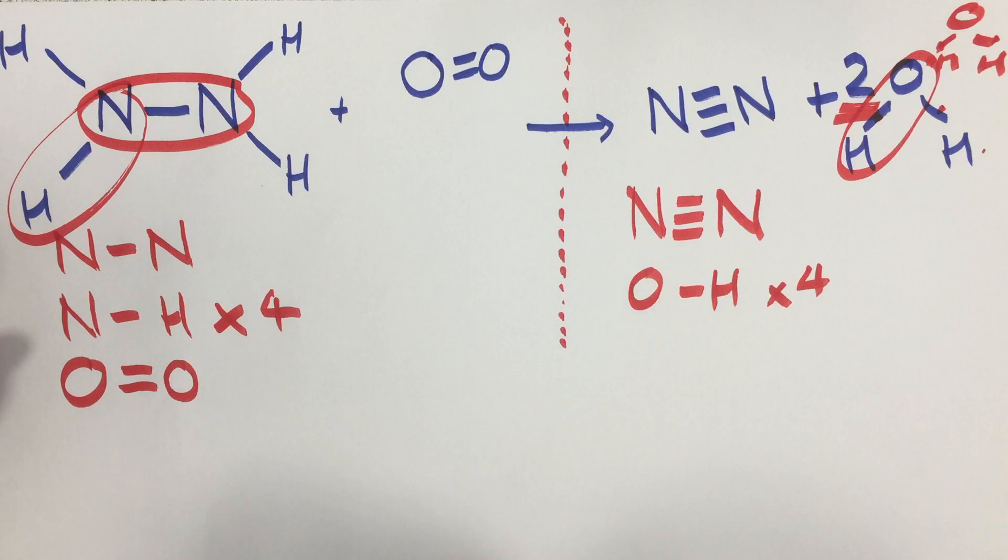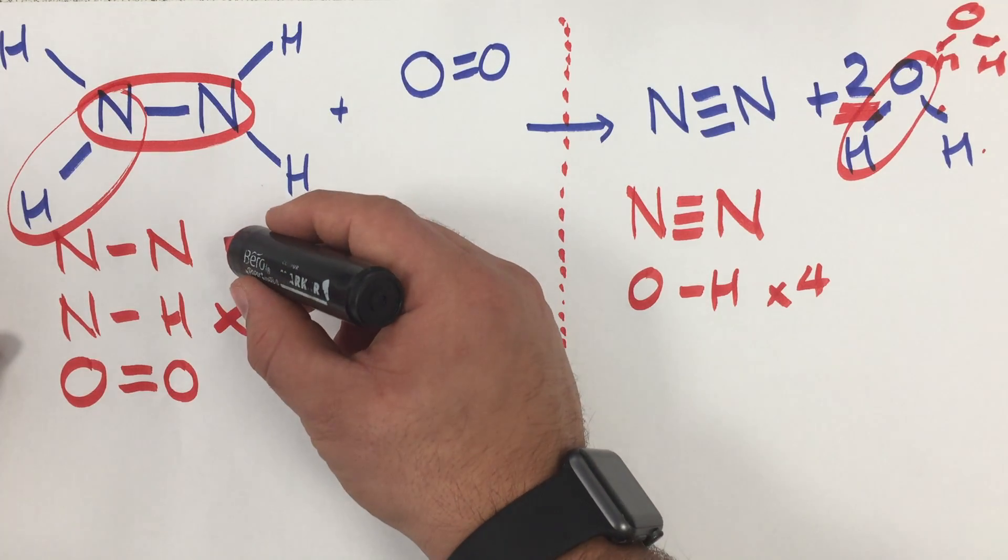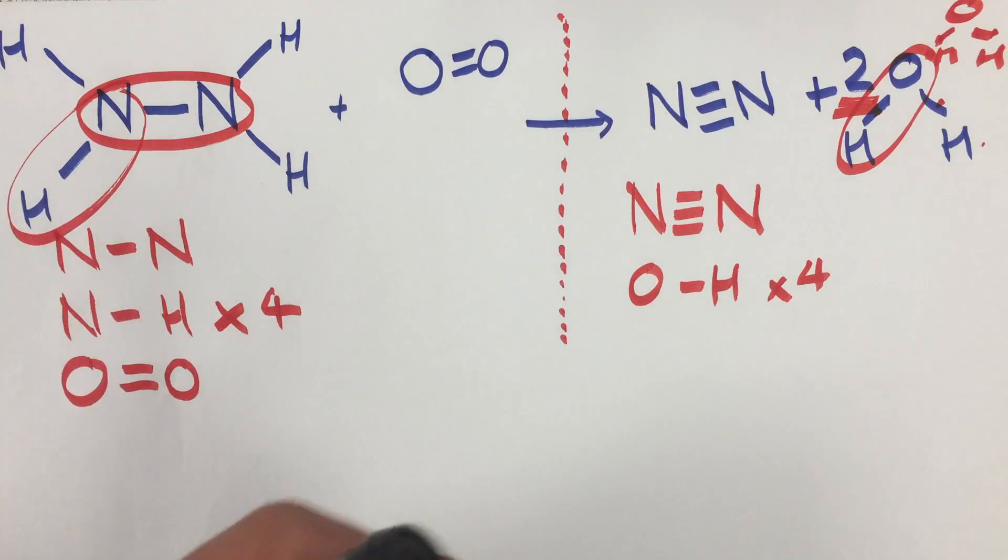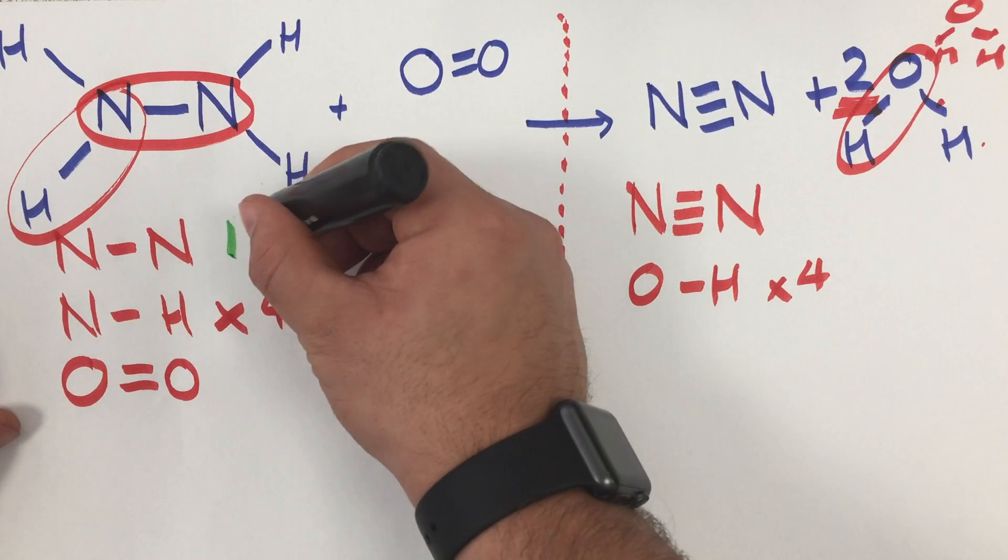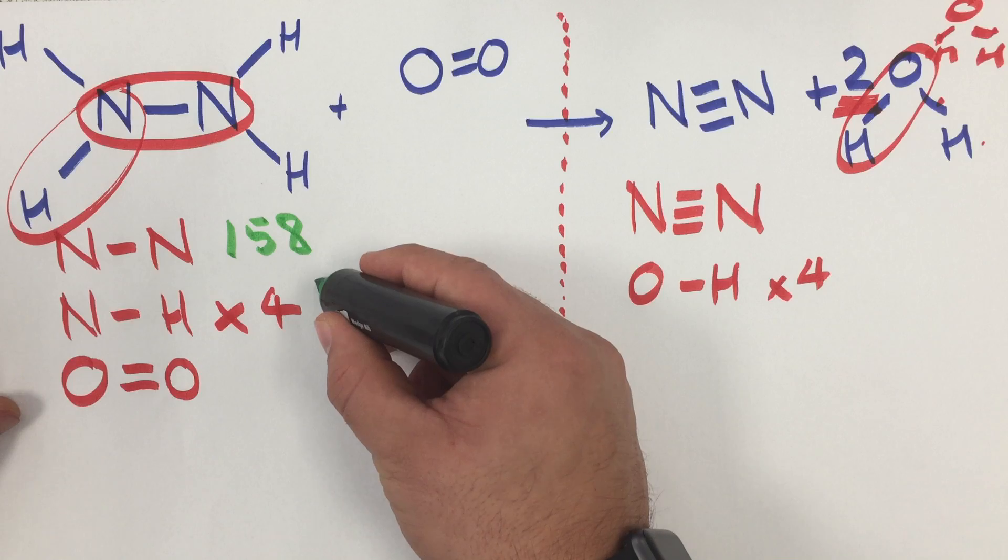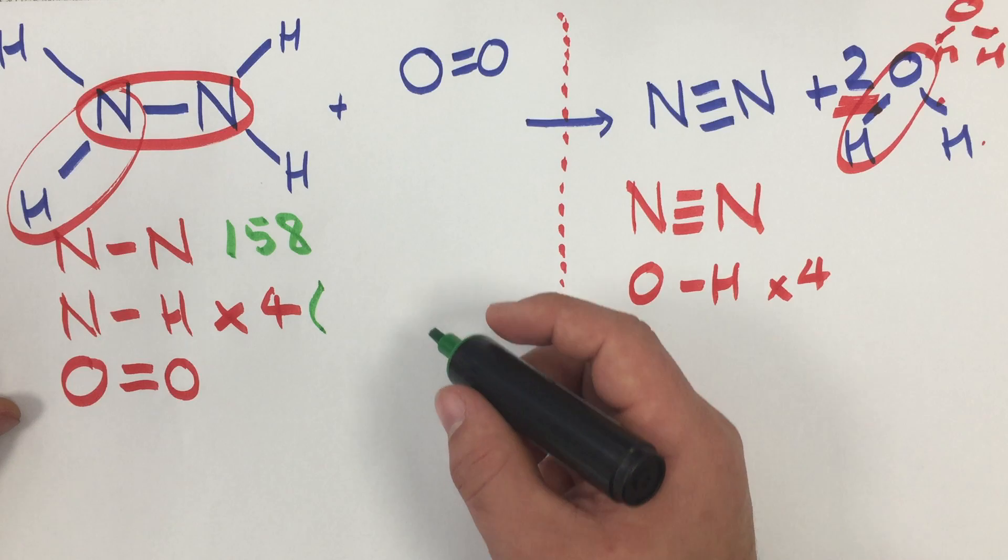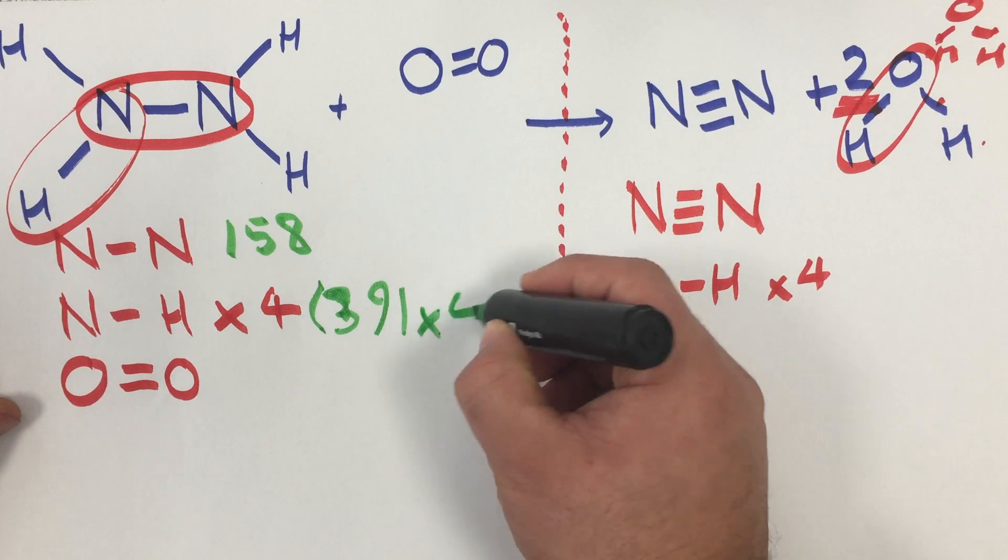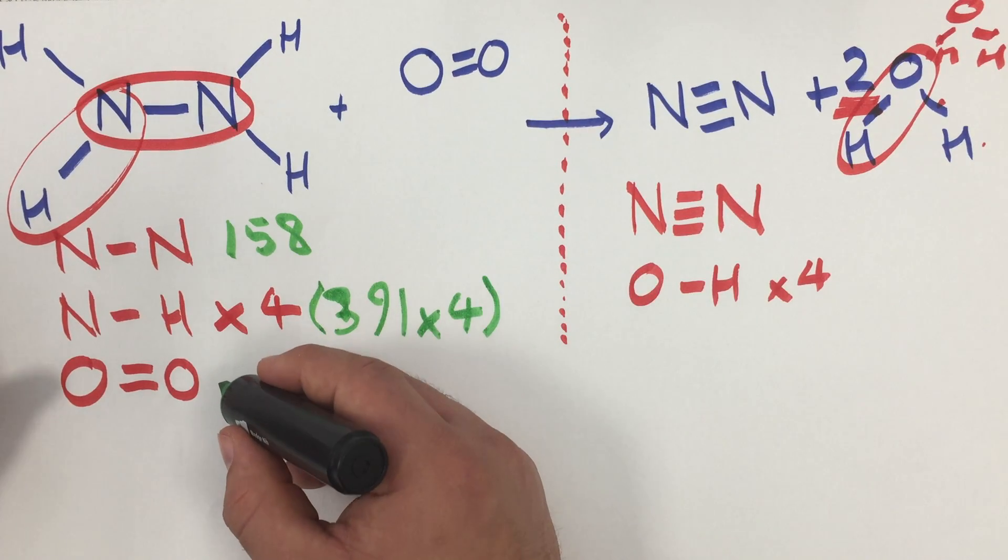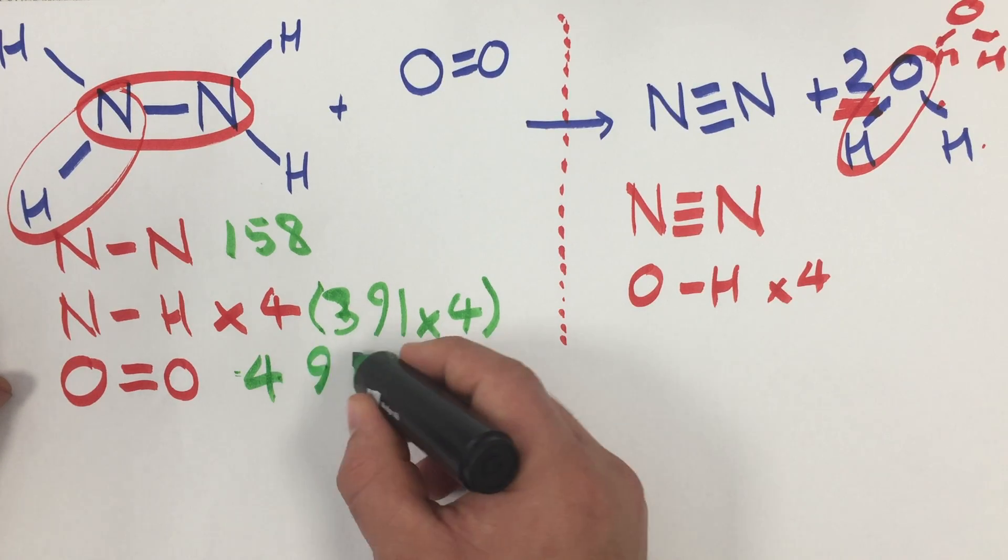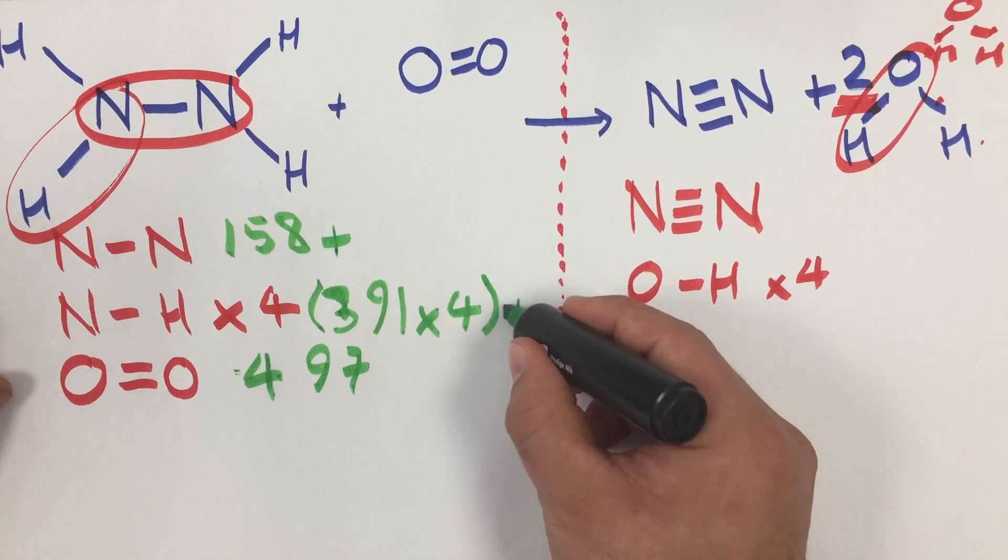So then what I need to do is look on a data table for the energy of each of these bonds. So first of all, a nitrogen-nitrogen bond is 156. Nitrogen-hydrogen is 391, but because I've got four of them I have to times that number by four. And then an oxygen double bond is 497. And then what I have to do is add all of these up to give me the total.